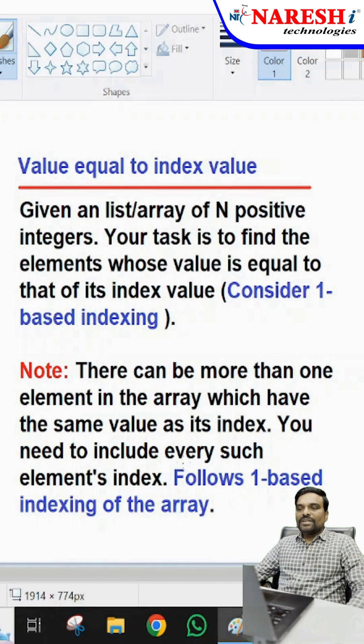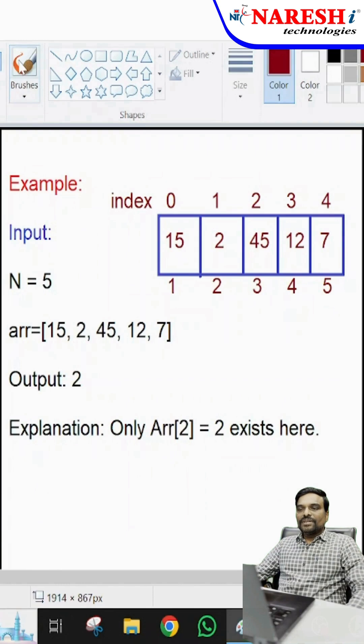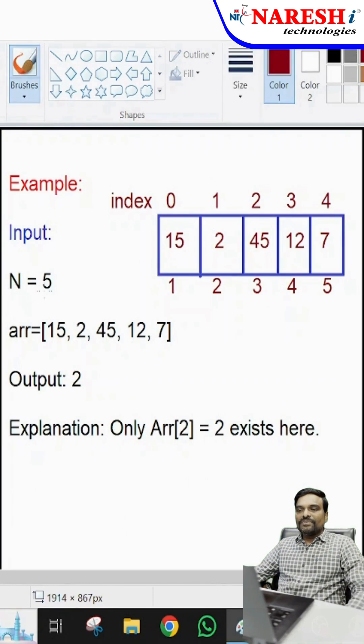For example, generally lists have zero-based indexing, but we have to compare with 1-based indexing. Let us see with an example. Assume the input array has five elements: 15, 2, 45, 12, 7. Actually the index starts at zero: 0, 1, 2, 3, 4.